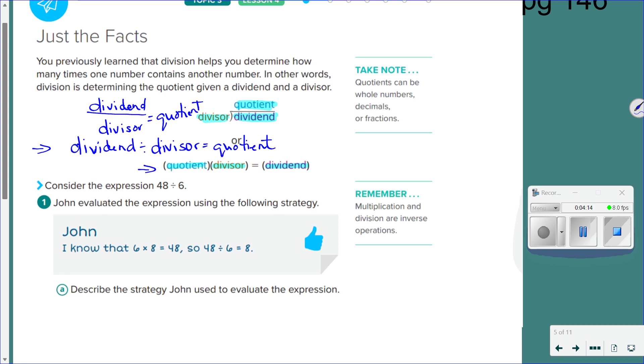We do have the commutative property of multiplication. Is everybody comfortable with that? Do we have a commutative property of division? No, we do not. You do not have a commutative property of division.